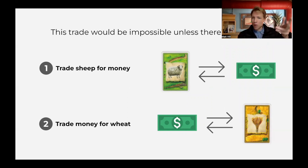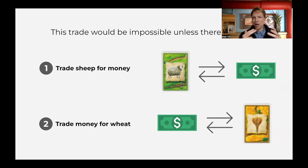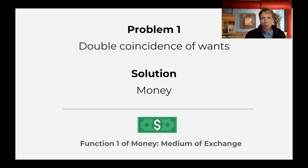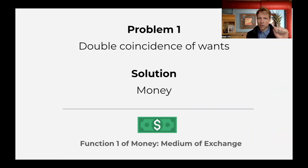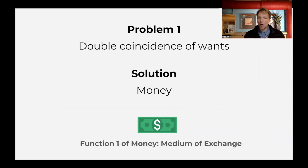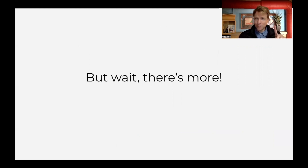In a typical barter economy, basically every transaction the parties would have to want what the other person has. But with money, you don't need this — you get rid of the issue of the double coincidence of wants. Money solves this problem and this leads into its first primary function, which is a medium of exchange. The first function that money serves is that it provides a way for exchanges and trade to happen between parties that don't necessarily have what the other person wants.